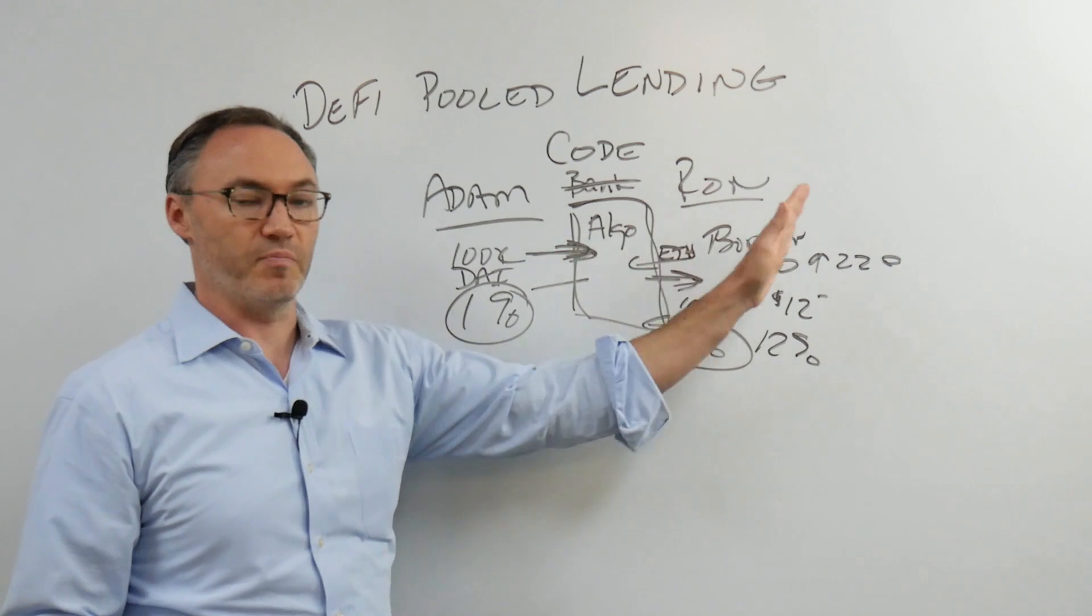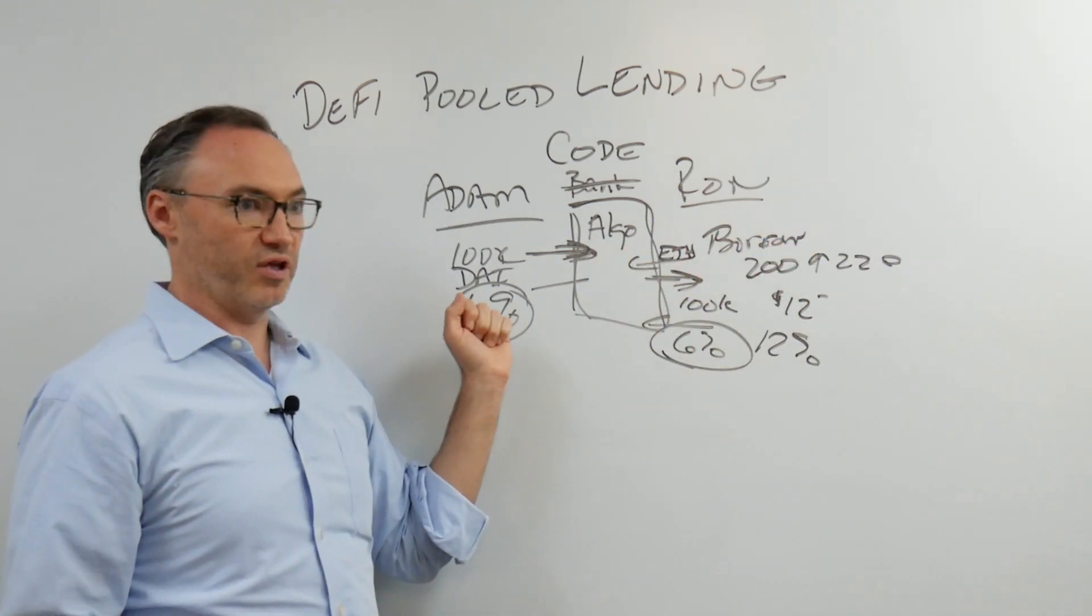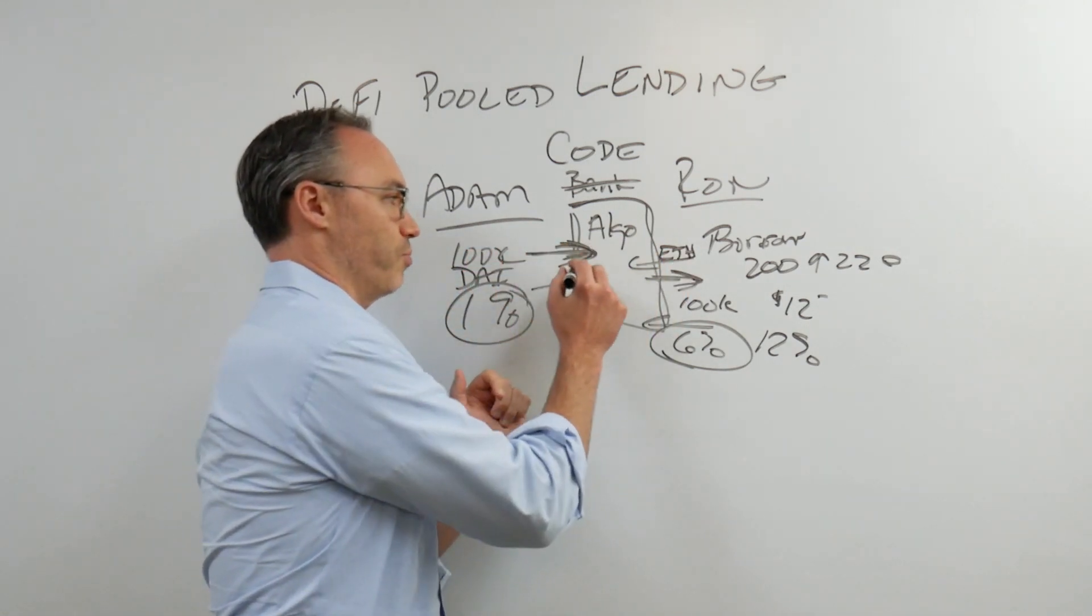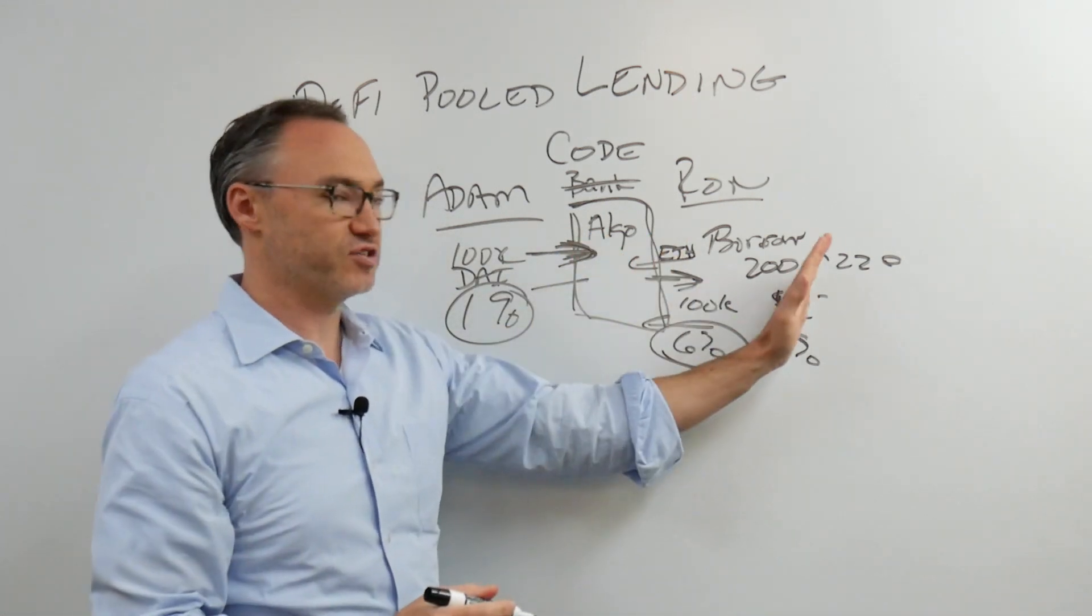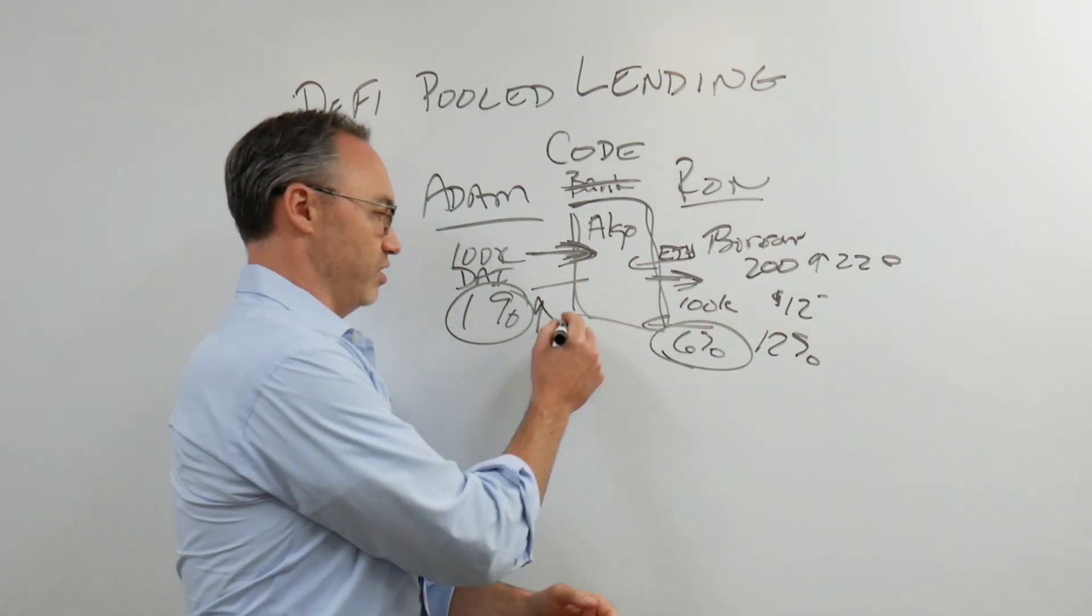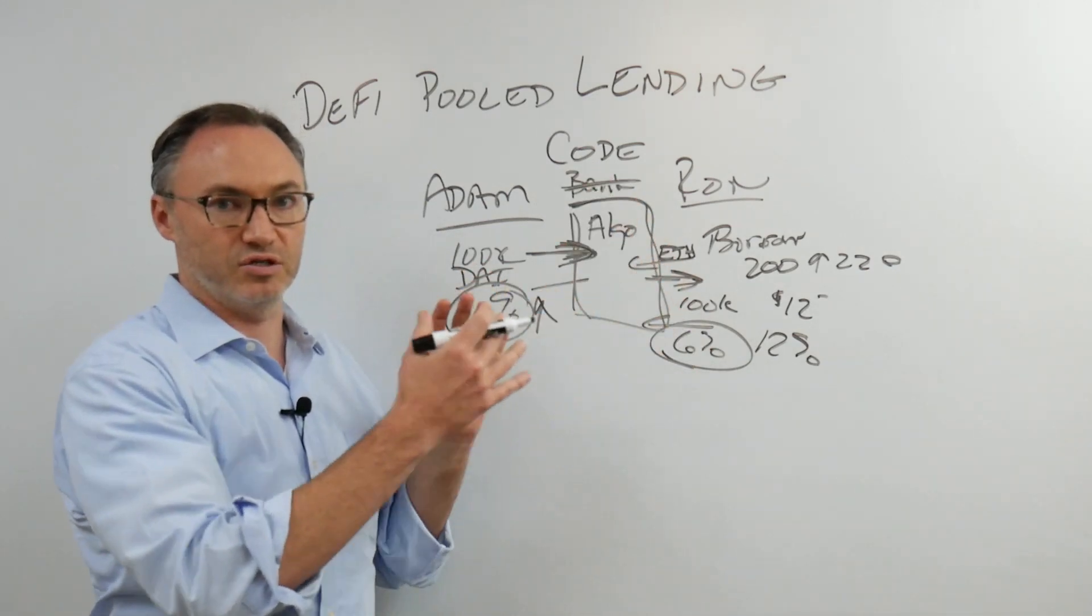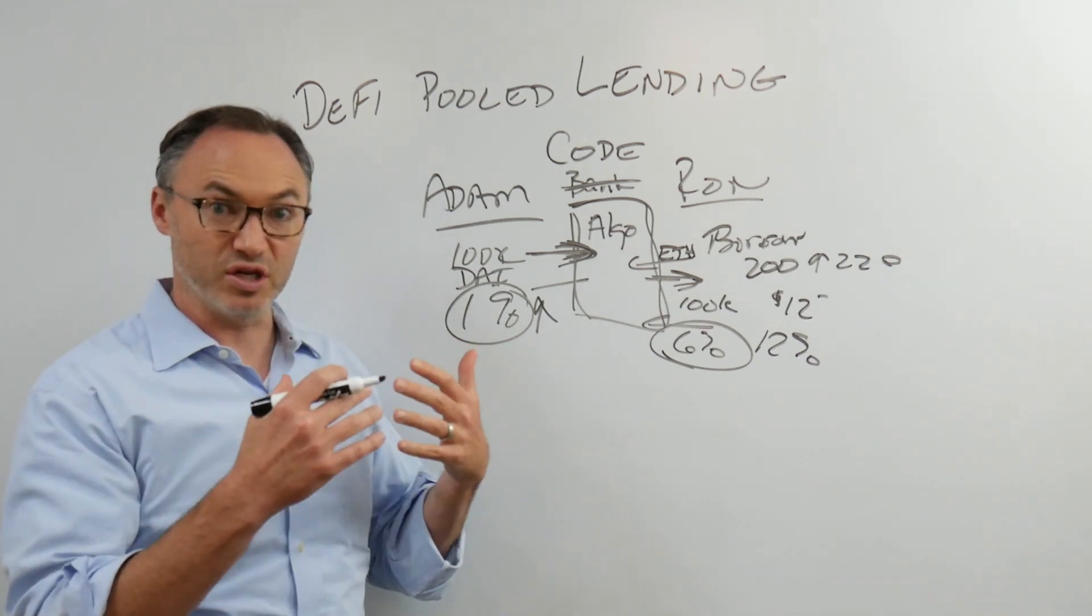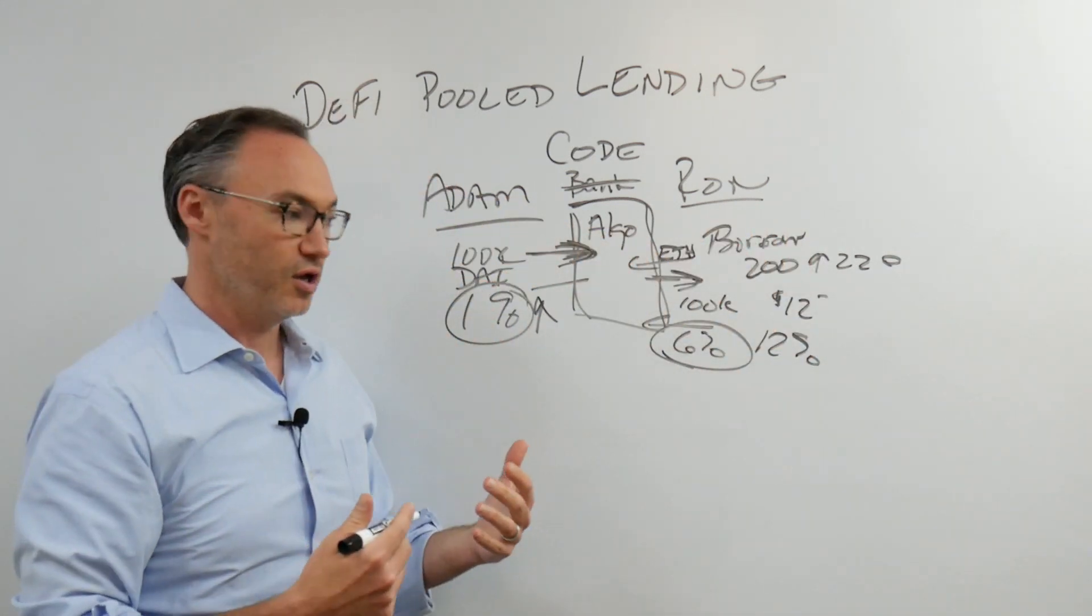So this algorithm is always looking at actual supply and demand. How many people are demanding loans? What are they providing as collateral? How many people, and because of that, how much liquidity do we need? How many people do we need to put their money, their DAI, into this smart contract to be able to satisfy this demand? For people to put money in this smart contract, we might have to raise the interest rate. The interest rate has to go up to 1% or 2% or 3%, and this is constantly adjusting.